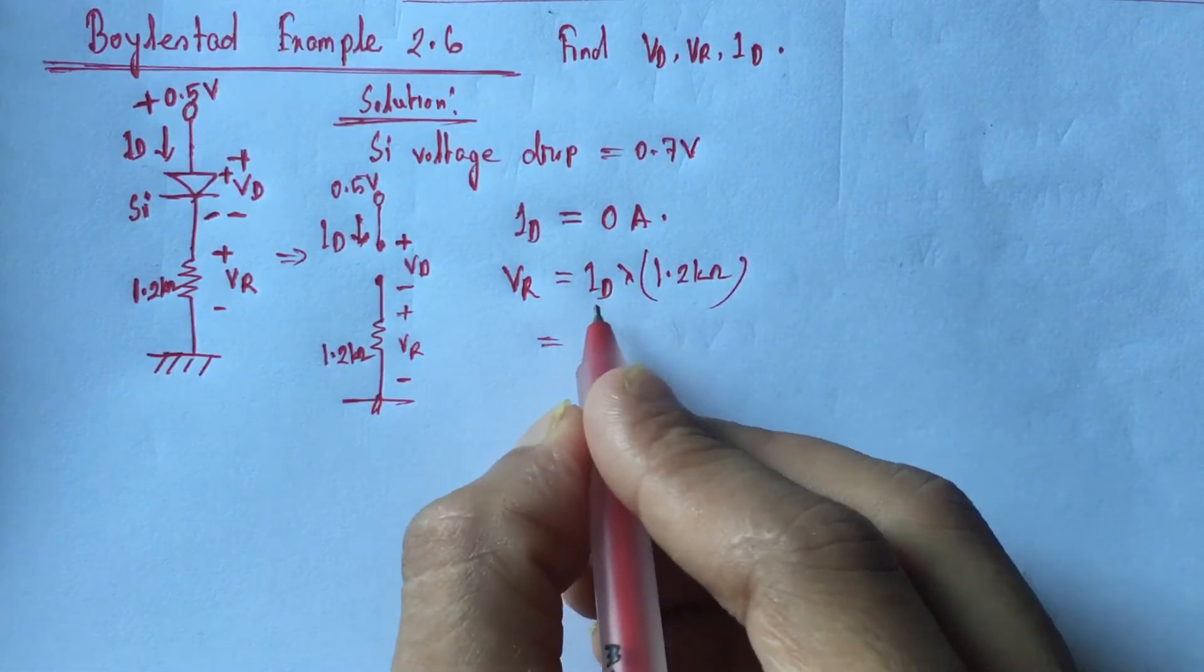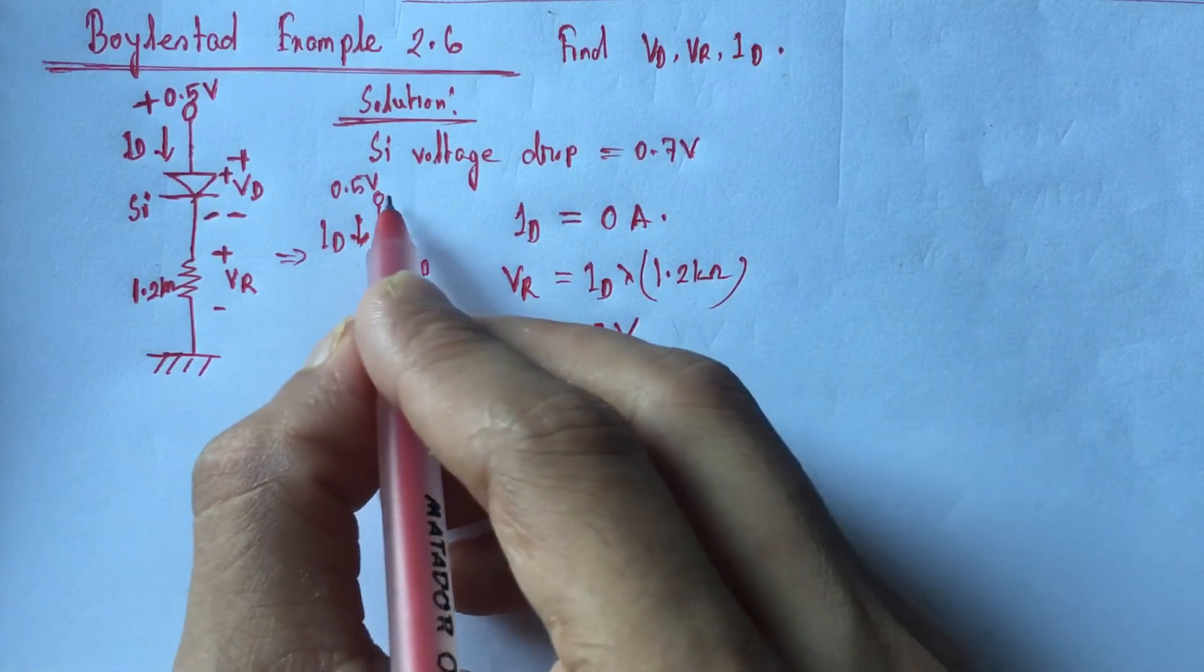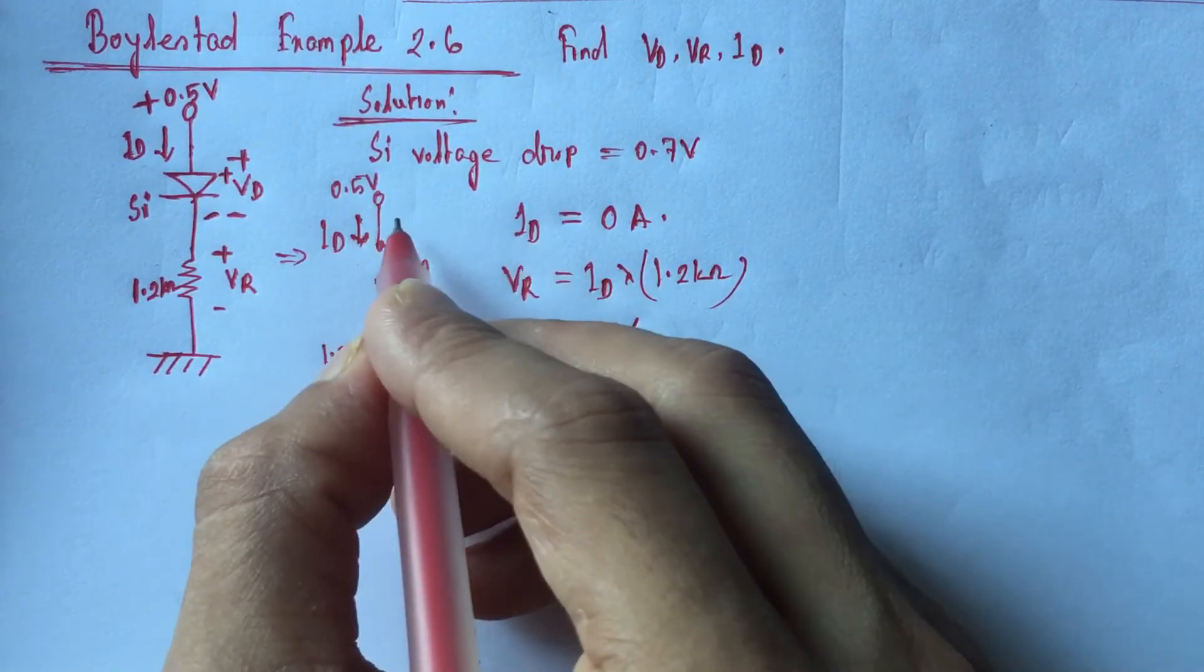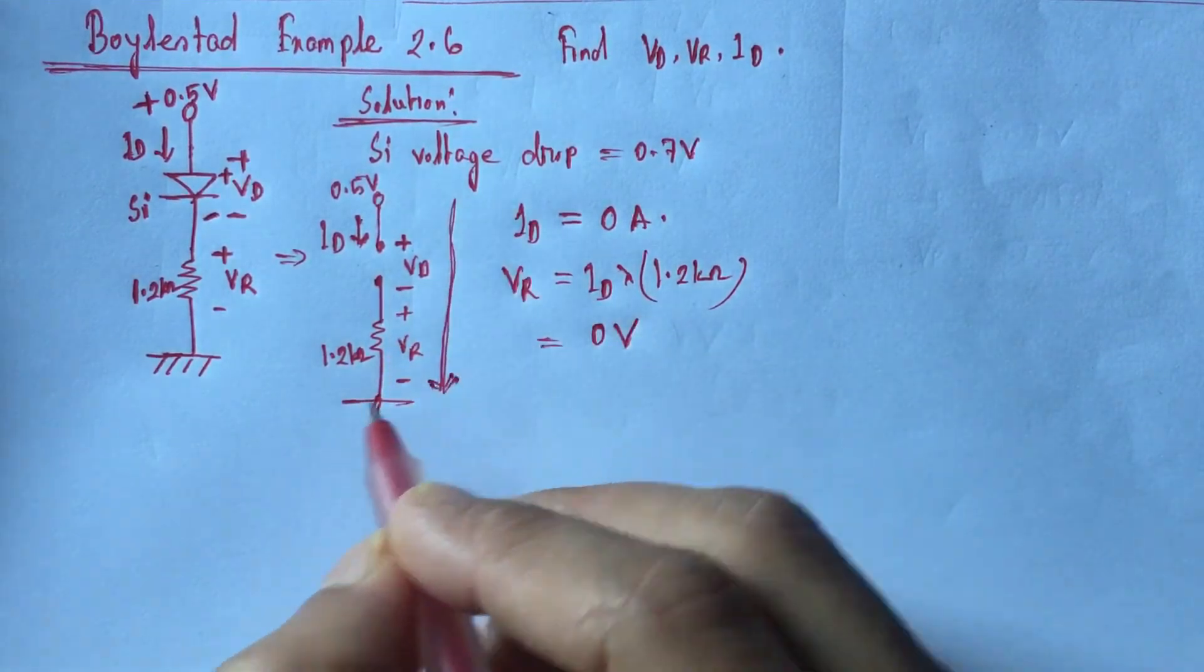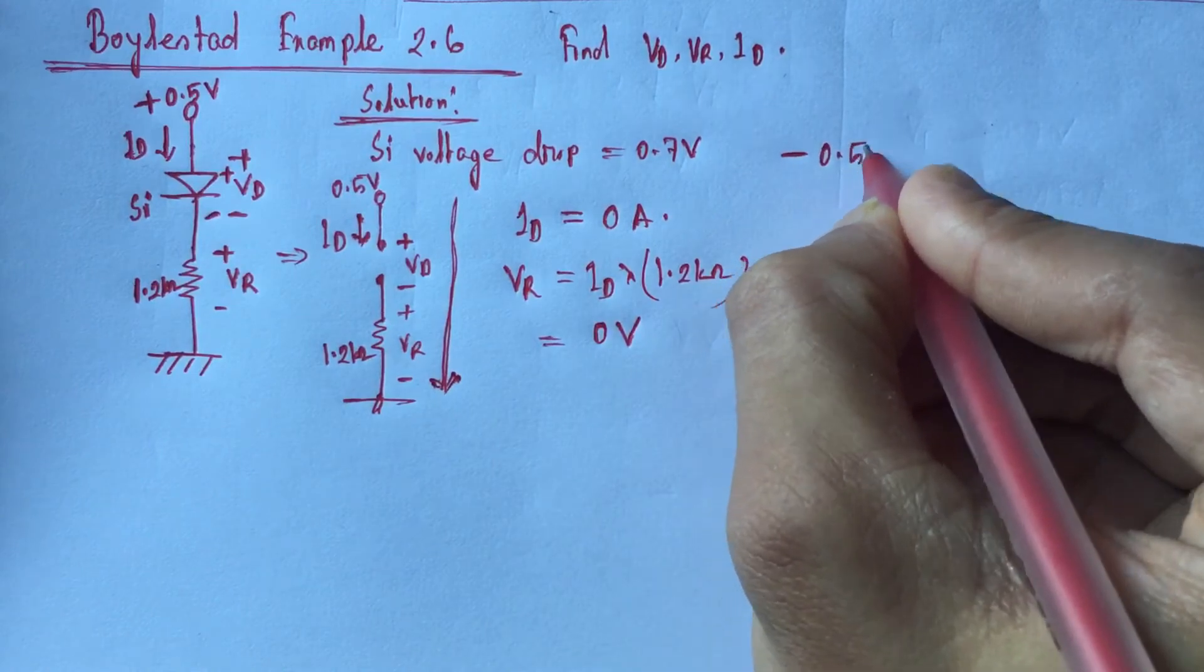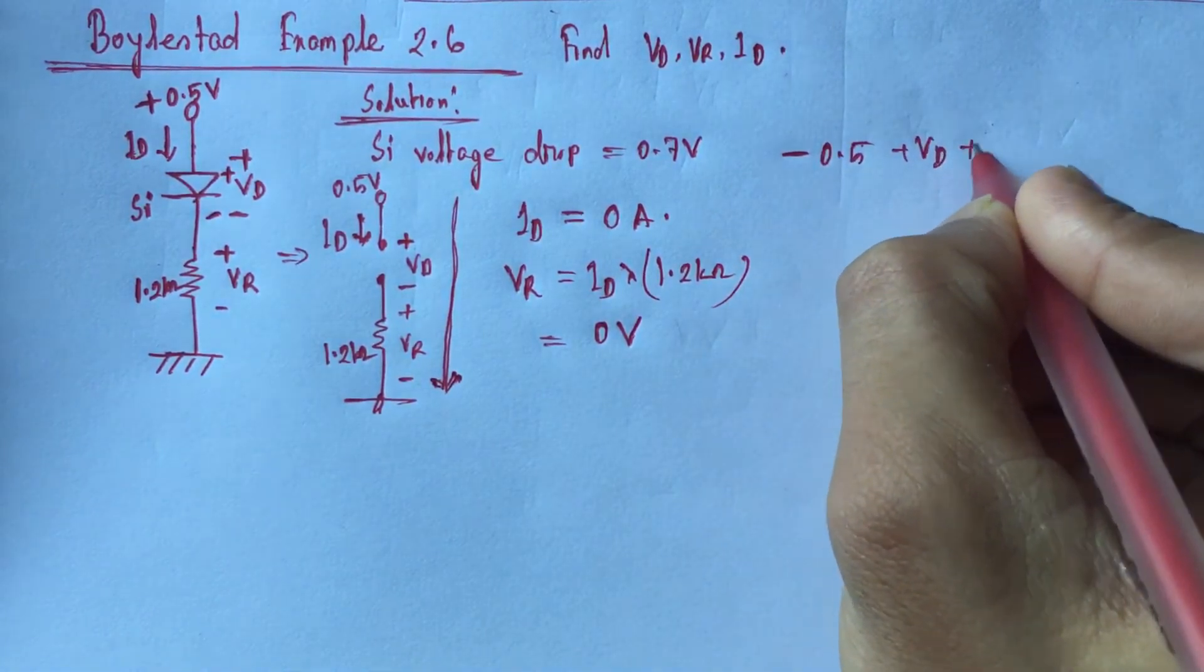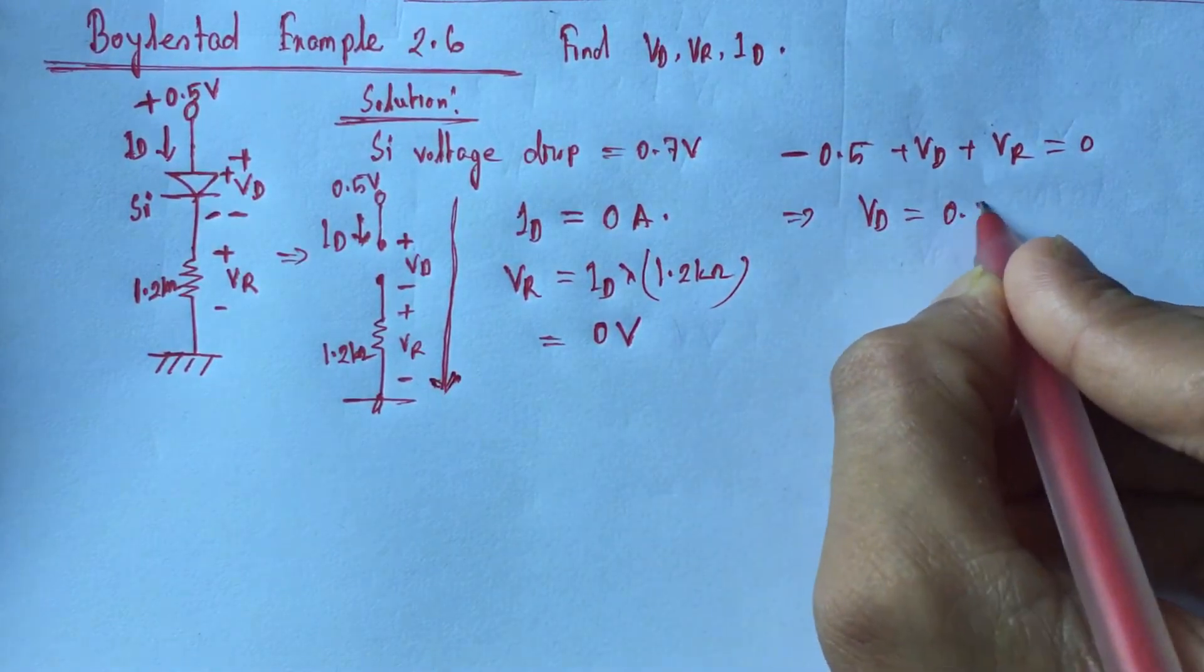Now if we apply Kirchhoff's voltage law throughout this path, through this loop, we will have minus 0.5 plus VD plus VR is equal to 0. That is VD is equal to 0.5 volt.